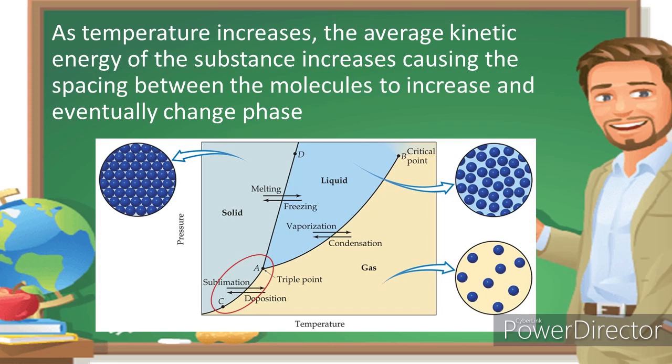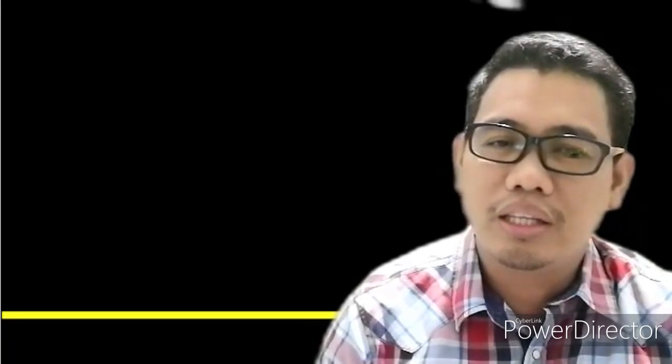As temperature increases, the average kinetic energy of the substance increases, causing the spacing between the molecules to increase and eventually change phase. Whenever temperature increases, there is additional heat energy that causes the motion to increase, so kinetic energy will increase and the particles will tend to move very fast.